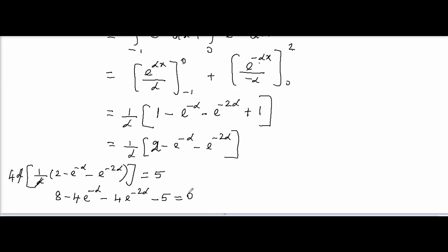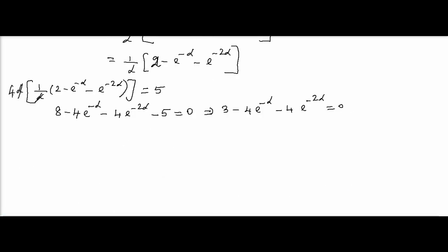So, that I get 3 minus... 8 minus 5 is 3. 3 - 4e^(-α) - 4e^(-2α) equals 0. So, this can be written as 4e^(-2α) + 4e^(-α) - 3 equals 0.